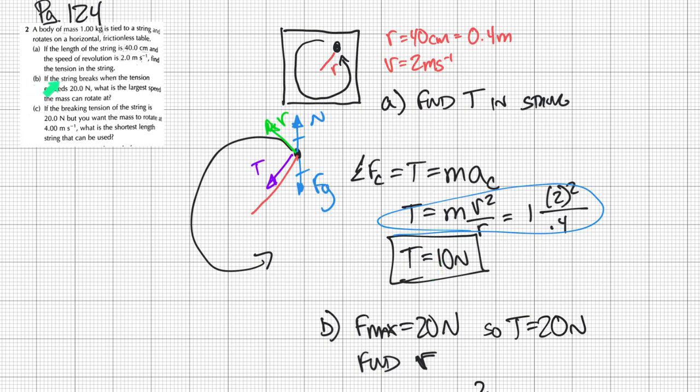Part B then says if the string breaks when the tension exceeds 20 newtons, what's the largest speed the mass can rotate at? And so my maximum force is going to be 20 newtons. And so I need to now find v. So in this case, we're going to set up this same equation here, except now we're going to know tension, and we'll solve for v.